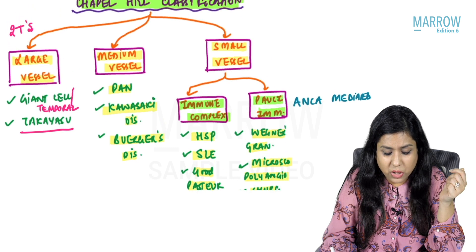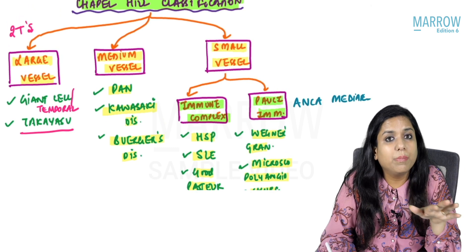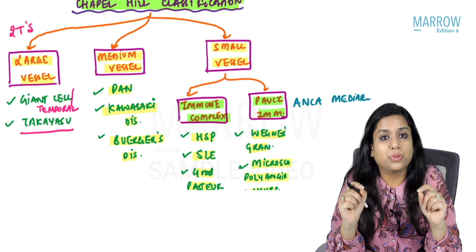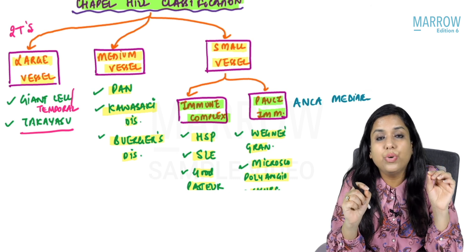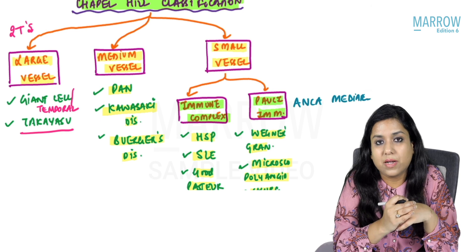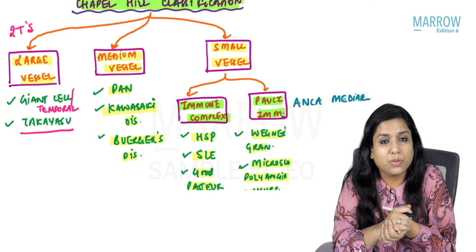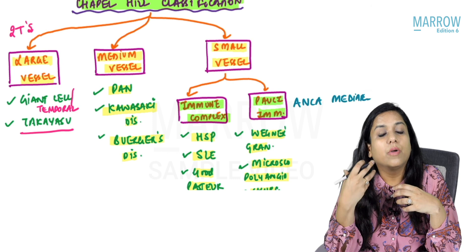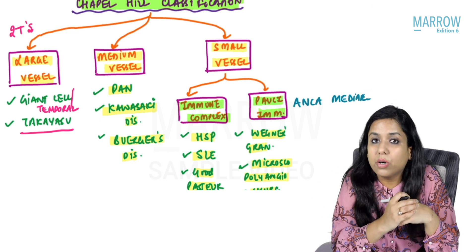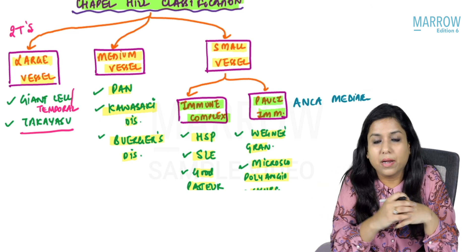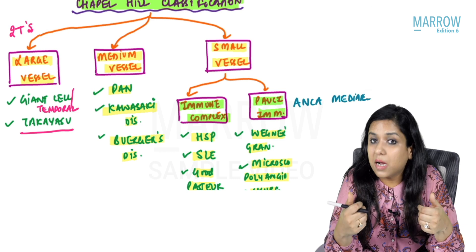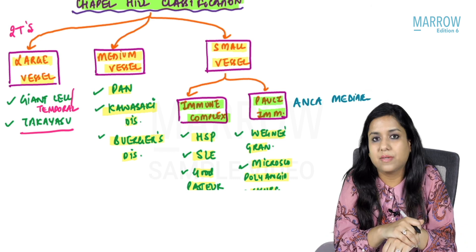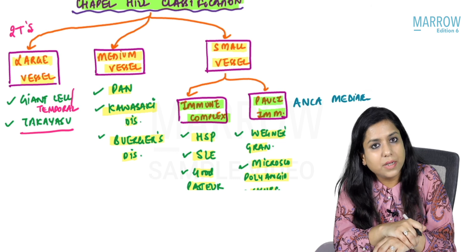This classification is extremely important for MCQ exams. Questions can ask which is not a medium vessel vasculitis, or which statement is not true for PAN — for example, one option might be that it is a large vessel vasculitis. You need to know this classification in detail.